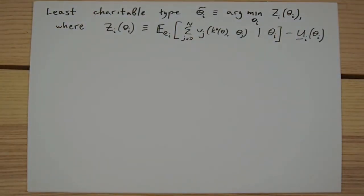This is the type that minimizes the expected welfare of all players under the efficient allocation rule, and under the special accounting scheme where player i's utility is measured relative to their outside option.